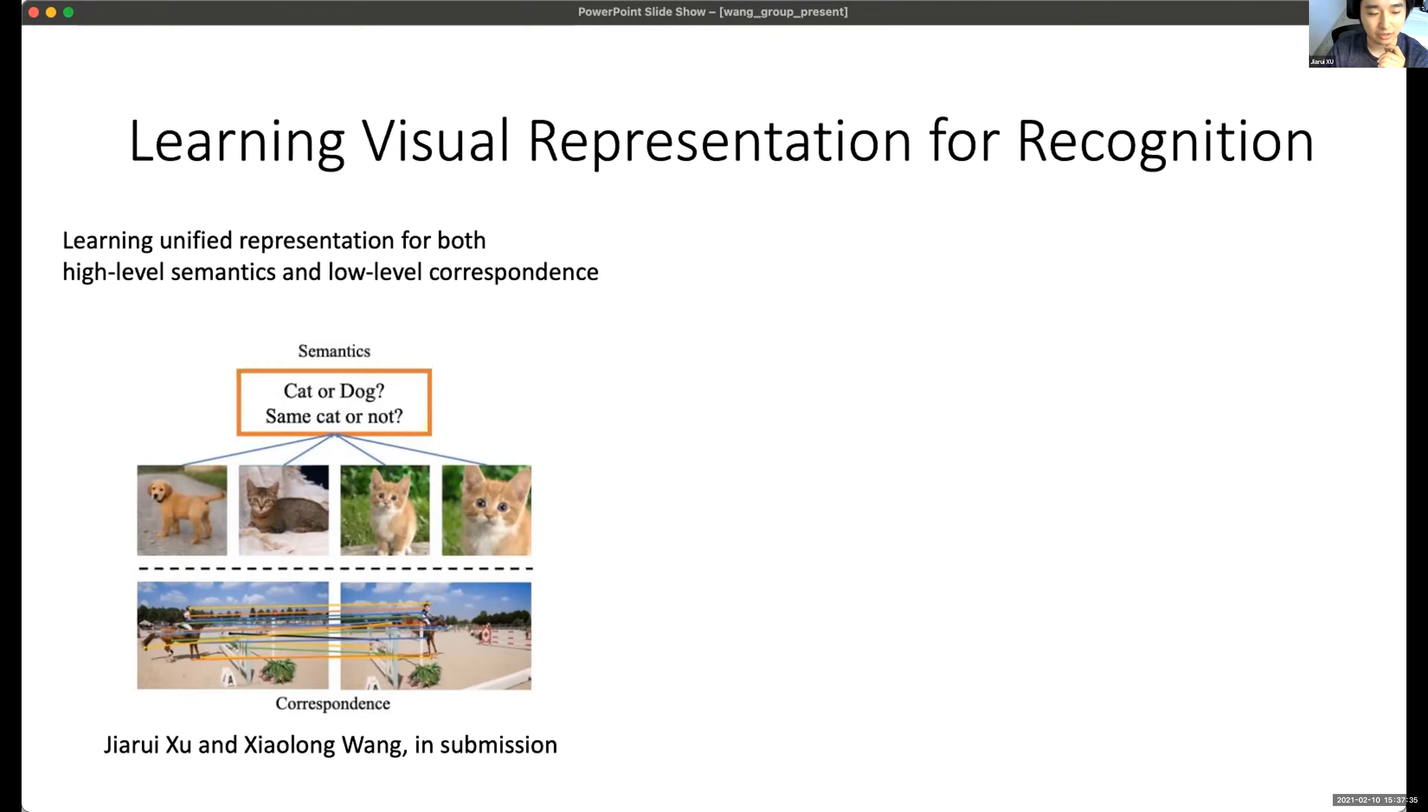For high-level semantics, it means that we can recognize a picture of a dog as a dog and recognize a picture of a cat as a cat. And for the correspondence, it means that we can learn from the videos to map the head of this person to the head of this person in another frame.